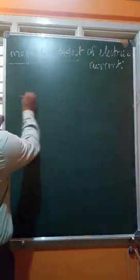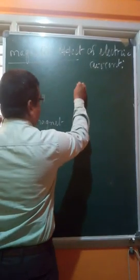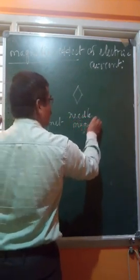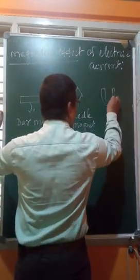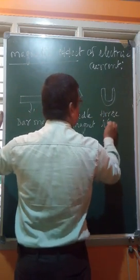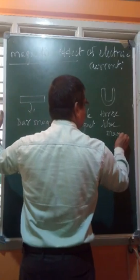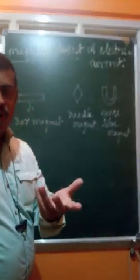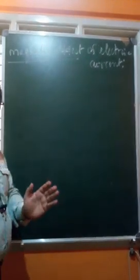According to the shape, artificial magnets are given different names. If a magnet is shaped like a bar, it is called a bar magnet. If it is shaped like a needle, it is called a needle magnet. If it is shaped like a horseshoe, it is called a horseshoe magnet. Various alloys are used to prepare these magnets in the laboratory.